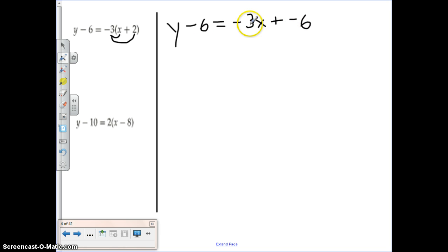Now I want to get that negative 3x over to this side, so I have to add 3x. So I have y plus 3x minus 6 is equal to negative 6.